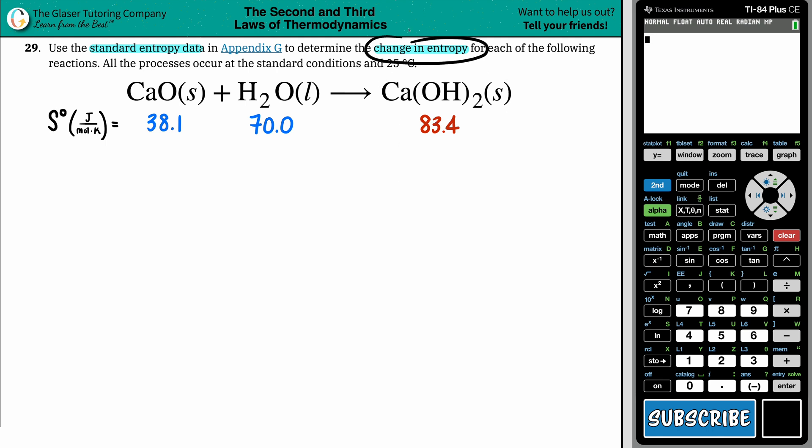Now, in this case, we want to find the change in entropy. Change in entropy is a delta S value, final minus initial. And since we're using standard values from a textbook, we're finding delta S notch. Anytime that you see that little notch symbol there, that means that it's all standard 25 degrees Celsius, going to the back of the textbook, finding out those values. And that's what we did here.